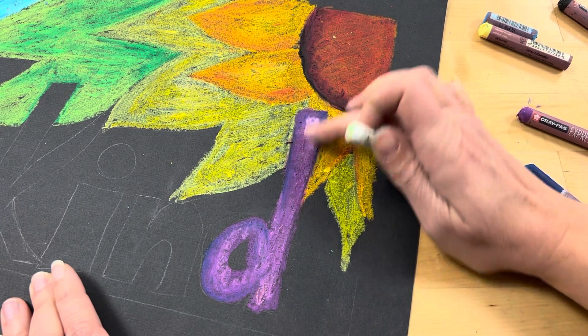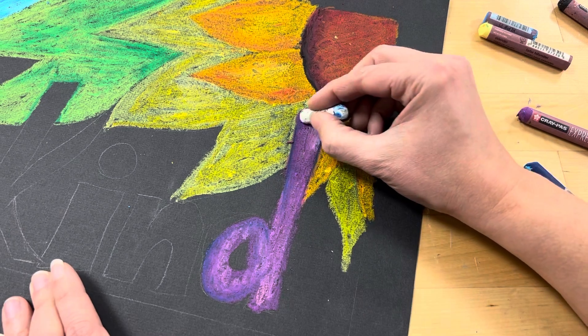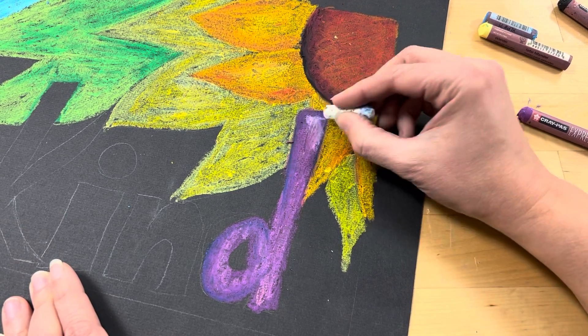You can also think about using white as a way to add some highlights. You can use your fingers to blend a little bit. But it does create more of a smudgy look. I don't tend to do that a lot. I'll do it a little bit.